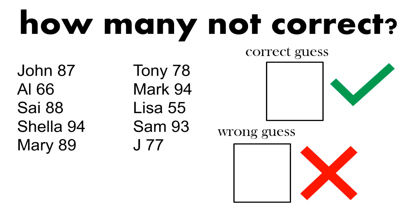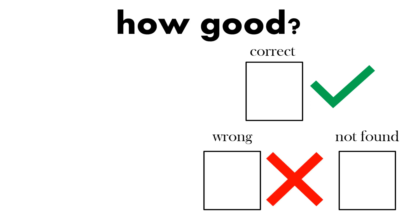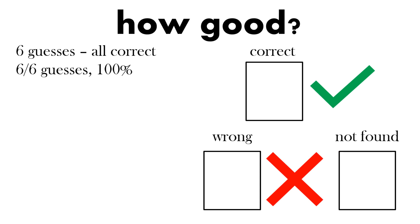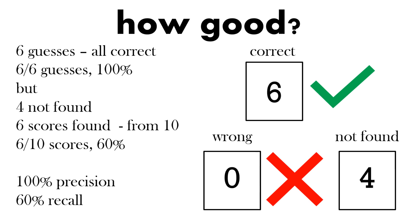Let's look at precision and recall together. If we have six guesses and we found three, we got fifty percent precision. If we had six out of six guesses correct, that's a hundred percent precision - six correct and no wrong. But we didn't find four others, so six scores were found from ten - six out of ten is sixty percent recall. So we had one hundred percent precision but sixty percent recall: six correct, none wrong, but four were not found.